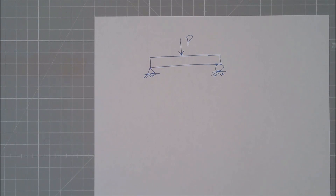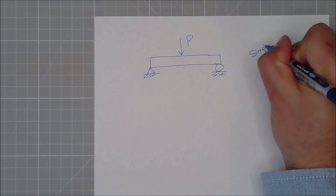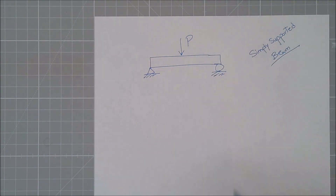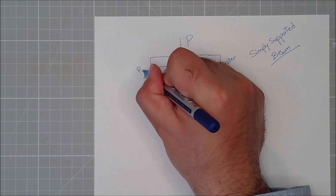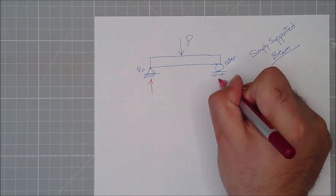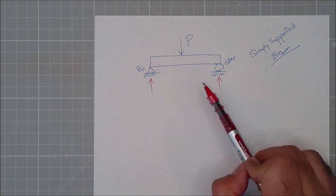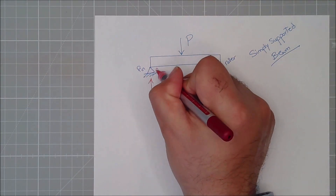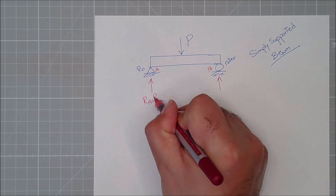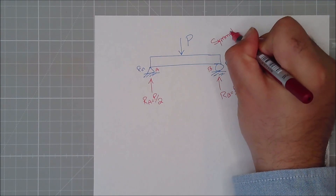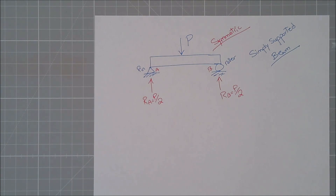We looked at a method to carry out the shear and moment diagram — let's apply it to our simply supported beam, which has a concentrated load, a roller, and a pin. Applying the same method to this case study: I quickly calculate the reactions. If A is on one side and B on the other, R_A = P/2 and R_B = P/2, because the system is symmetric.